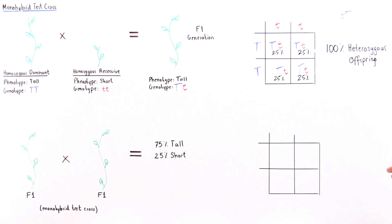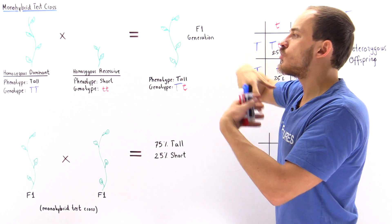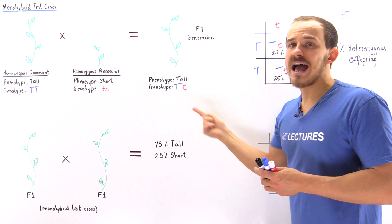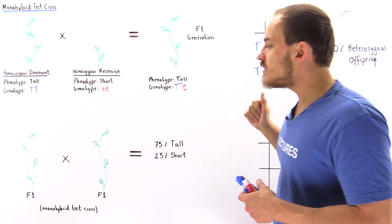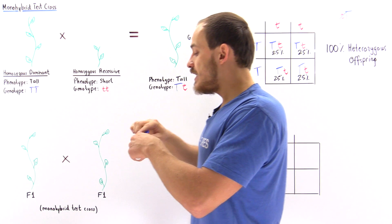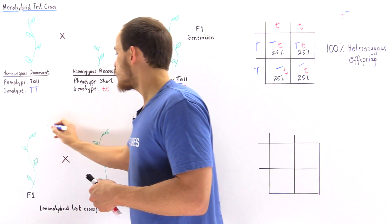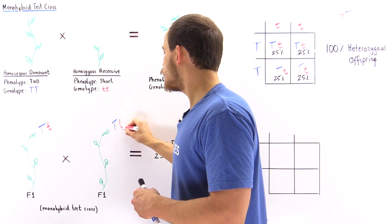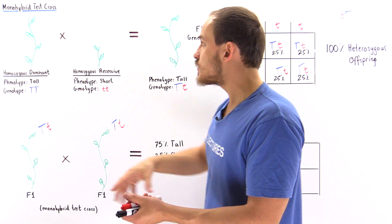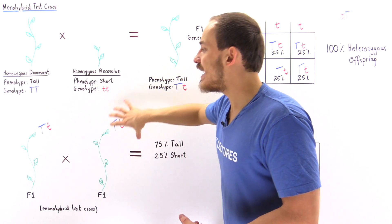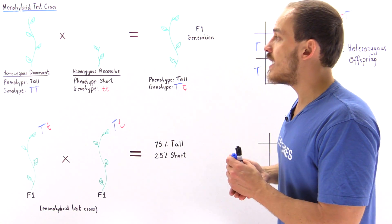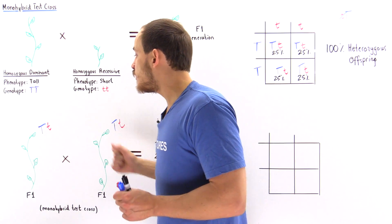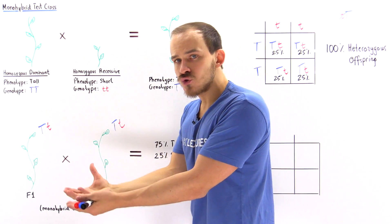Now let's move on to experiment number two. In experiment two, Mendel took the F1 generation that was produced and crossed it with itself. That means he crossed two heterozygous offspring — uppercase T, lowercase t crossed with uppercase T, lowercase t. This cross is between a heterozygous individual and a heterozygous individual for the same trait, height. This specific type of cross is known as a monohybrid test cross, because we are crossing two heterozygous individuals for a single given trait.